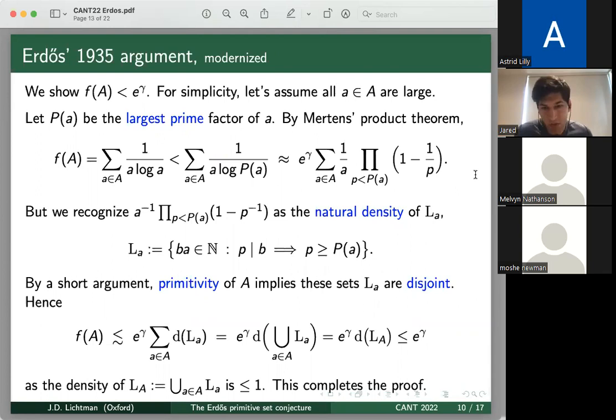So now once we've done this, by a relatively short argument, the fact that A is primitive actually implies that these sets L_a are pairwise disjoint. So this is a point property of A where we're using primitivity in a crucial way and is not true in general. But now once we have this, we see that the sum of densities D(L_a) is now equal to the density of the union of these L_a's. So for convenience, we'll say that L sub capital A is just this union of L_a's. And so now we have a bound of e^γ times D(L_A). But we know that any density is at most one. So we can just bound this density and get finally that f(A) is bound by e^γ. And so this gives a rough sketch of the proof. And again, one can make this argument rigorous by inserting explicit estimates and getting kind of asymptotic result. But I'm suppressing some of the details for simplicity.